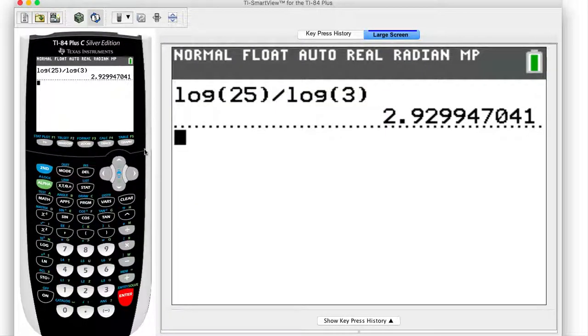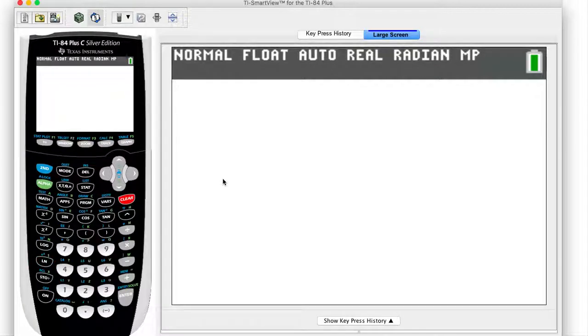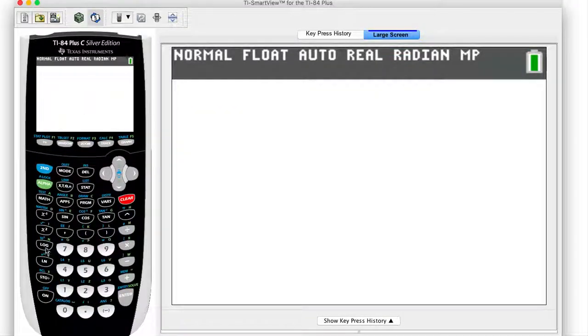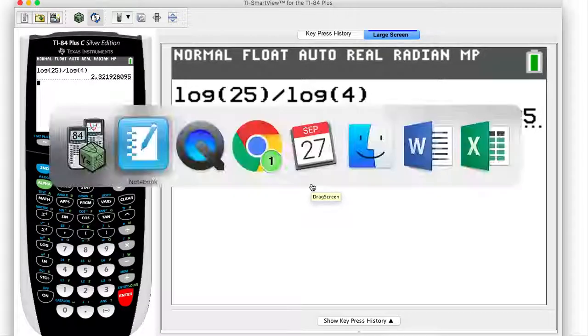And it's going to give us the same decimal. But our calculators only use base 10. There is also a natural log, which is base e. So actually, to highlight this, I'm going to use both bases. So I'm going to do log of 25 divided by log of 4. And so that gives me 2.32.